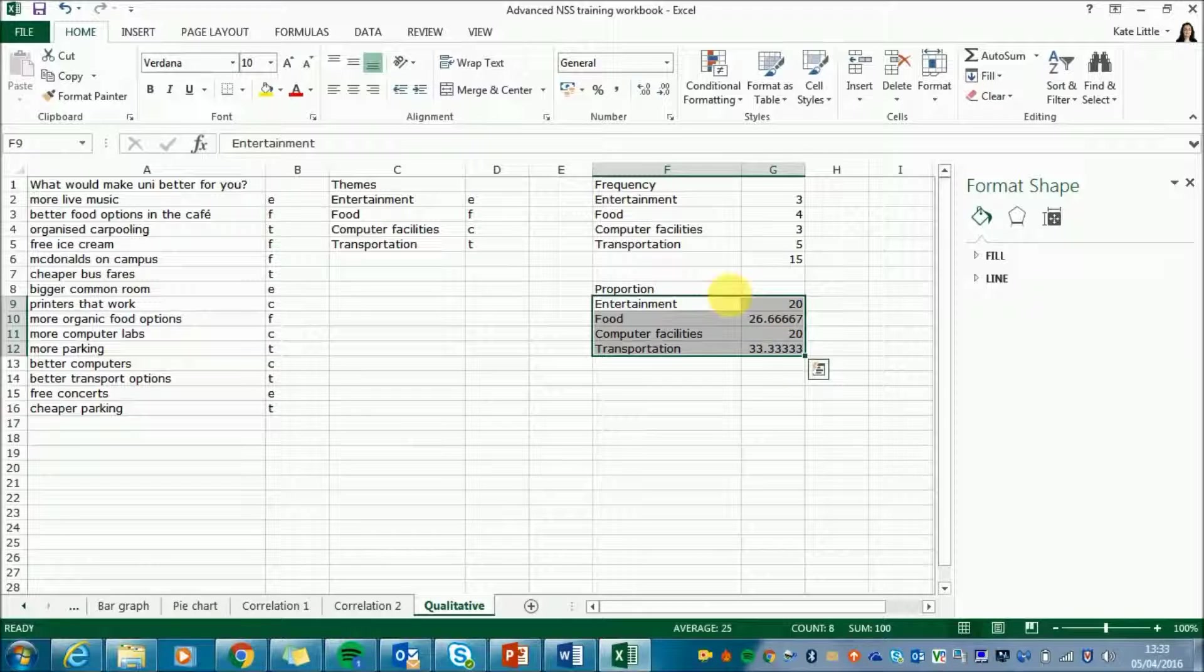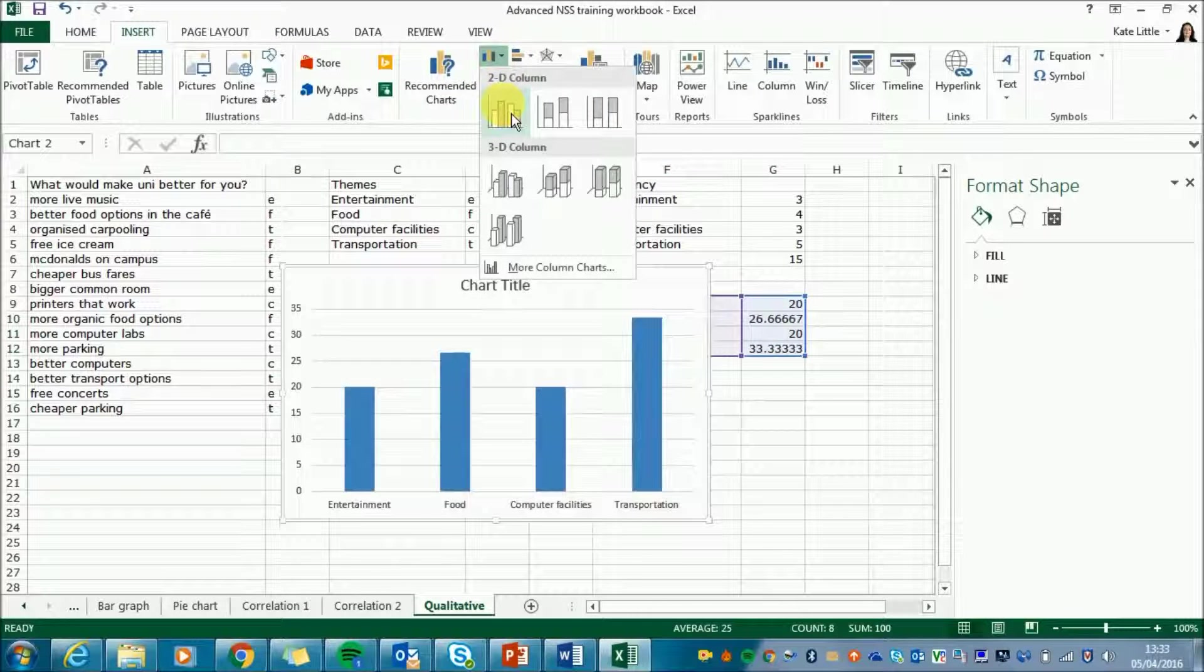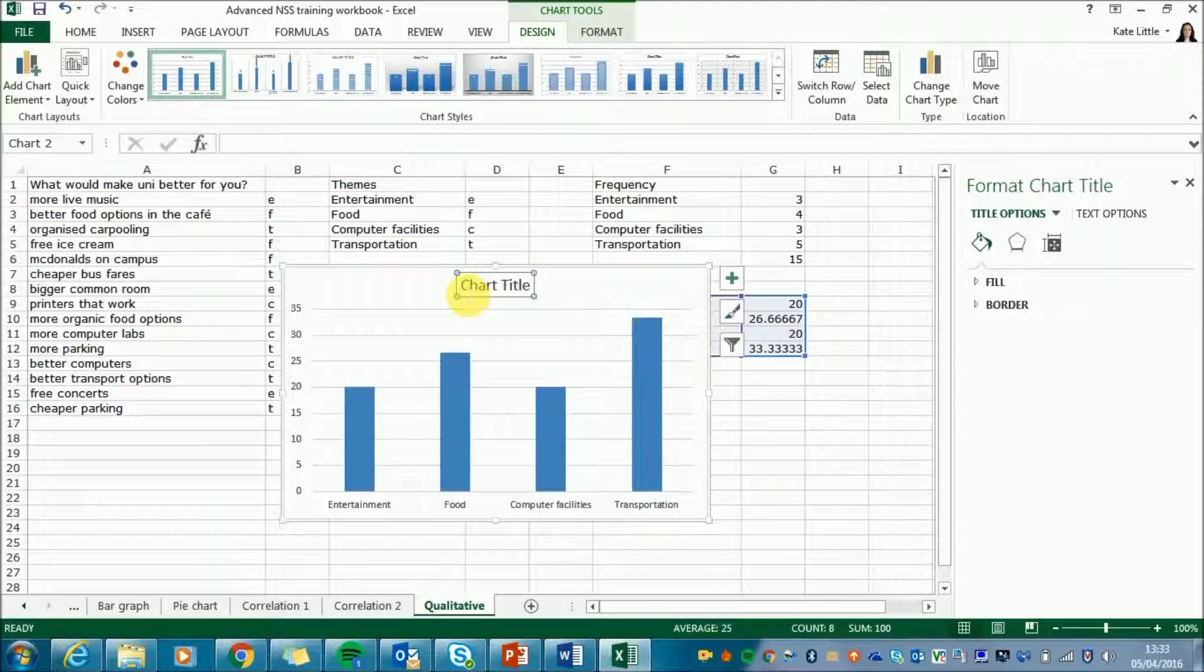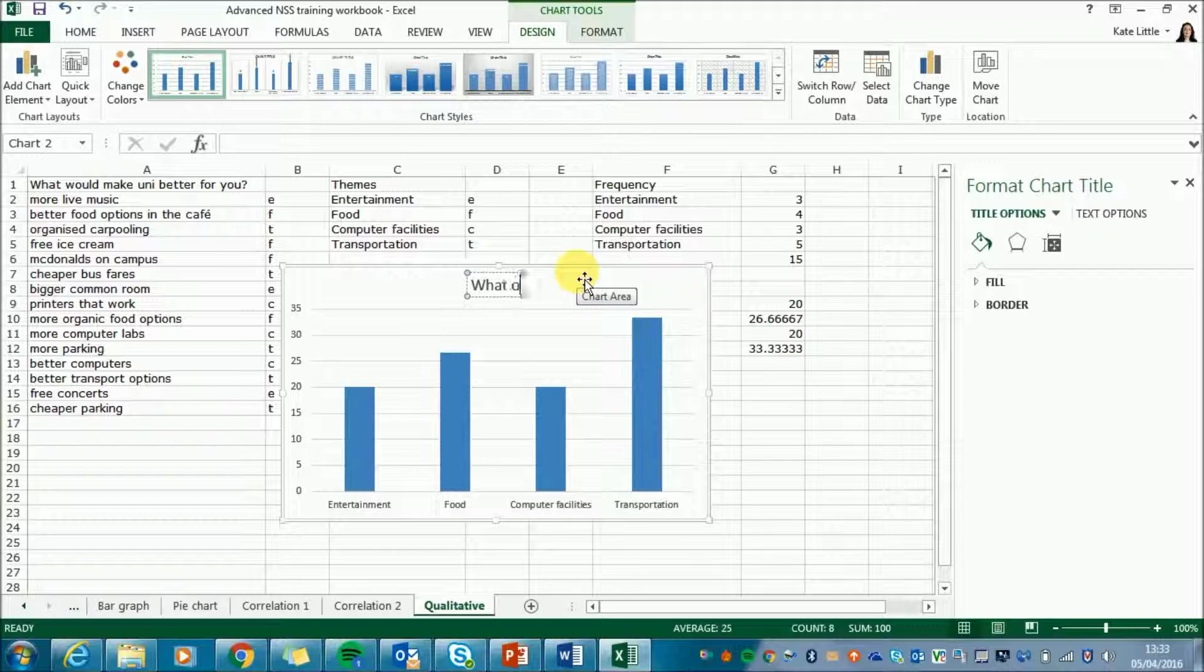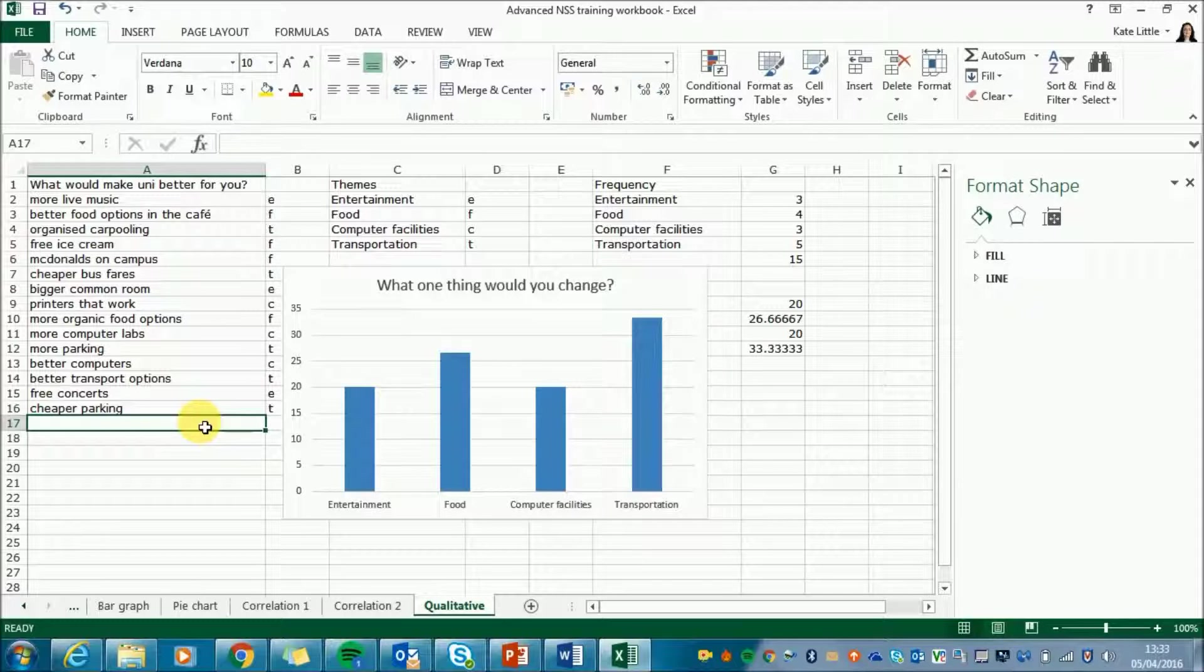So now I've done that I'm going to turn our little proportion table into our simple graph. So I'll just highlight all my data and go to insert and choose a simple 2d column chart. There we go. I will just amend my title to say what one thing would you change? And that's something I can add into a report to back up my findings.